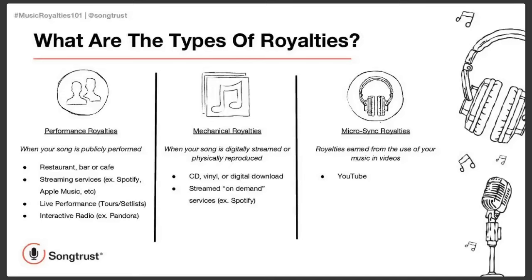Mechanical royalties are generated when your song is digitally streamed or physically reproduced — like a CD or a vinyl, even a digital download from iTunes or Amazon Music — and they're also generated from streaming services. It's really important to notice that streaming services are on both performance and mechanical royalties, so one stream of your song is generating both. That's another really great point of why it's not enough to just be affiliated with ASCAP or BMI. You need to be with a publishing administrator who's registering your works with the mechanical societies. We also have micro-sync royalties, which are generated from the use of your music in videos, like on YouTube.